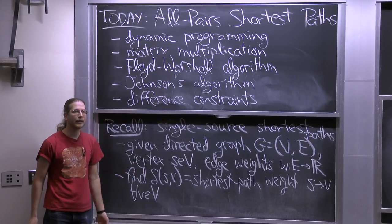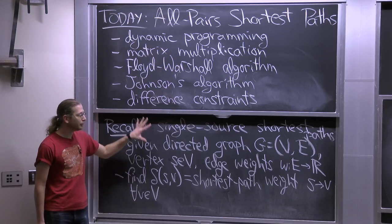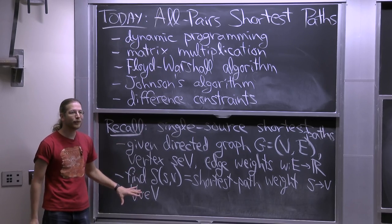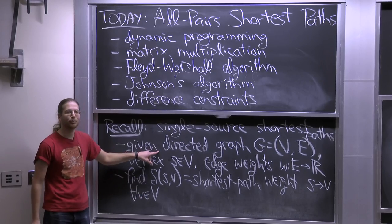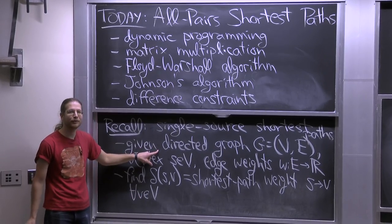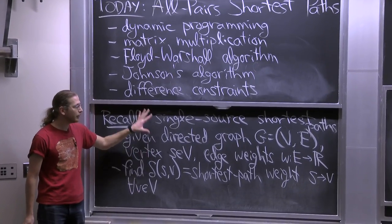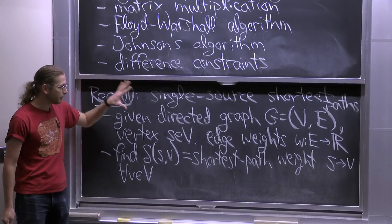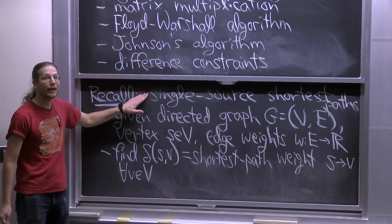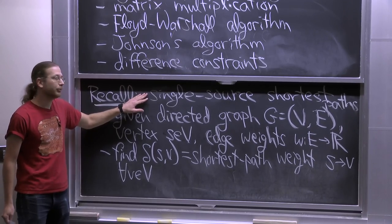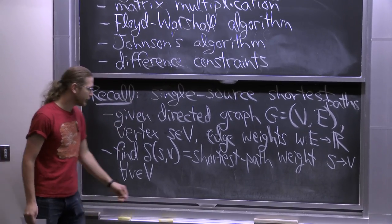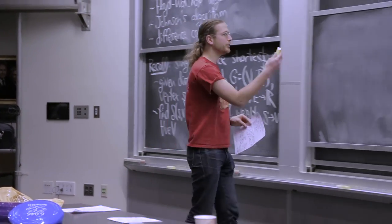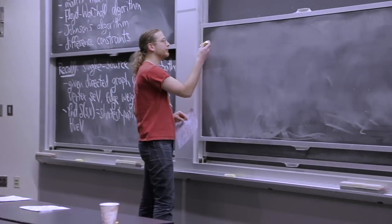Today we're going to solve a harder problem, which is all pairs — I want to go from all A to all B. What you saw in 6.006 was single source, where you're given one vertex and want to know how to get to everywhere. The reason you saw this version and not the A to B version is because the best way we know to solve A to B is to solve this problem.